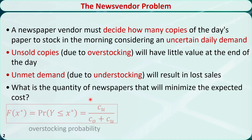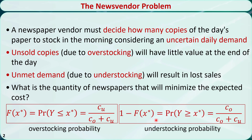We found out that the optimal quantity x* is determined so that the overstocking probability — the probability of the demand Y being less than or equal to the order quantity x* — is equal to the unit understocking cost over the sum of the unit overstocking cost and the unit understocking cost. Also, the understocking probability — the probability of the demand Y being greater than or equal to x* — is equal to the unit overstocking cost over the sum of the unit overstocking cost and the unit understocking cost.